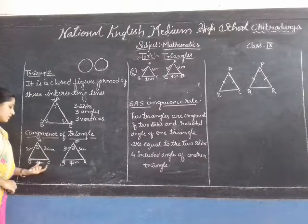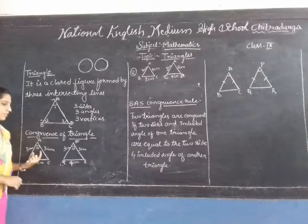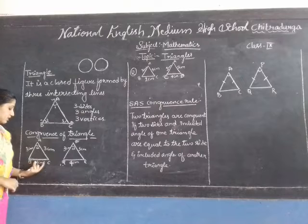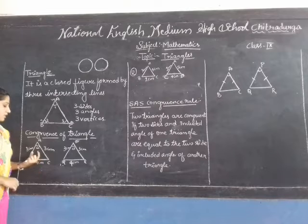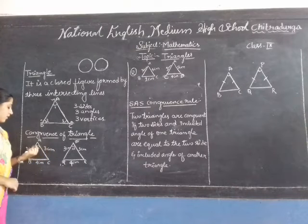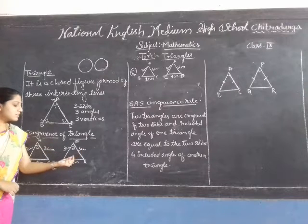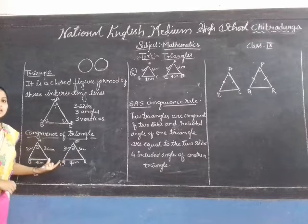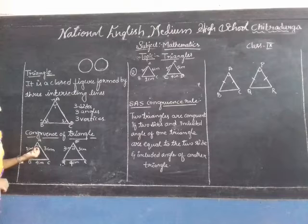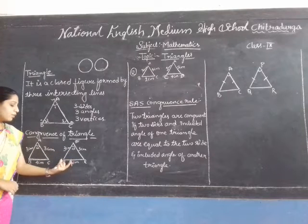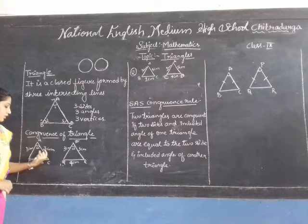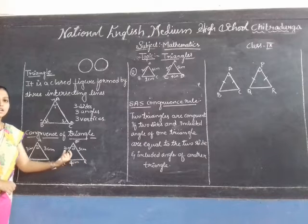Here are two triangles: triangle ABC and triangle PQR. Triangle ABC has three sides — one side is 3 cm, another side is 3 cm, and the third side is 4 cm, and an angle of 60 degrees. We can say triangle ABC is congruent to triangle PQR only when the three sides and the included angle of one triangle are equal to the corresponding sides and angle of another triangle. Triangle PQR also consists of the same sides and the same angle when compared to triangle ABC, so these two triangles are congruent to one another.